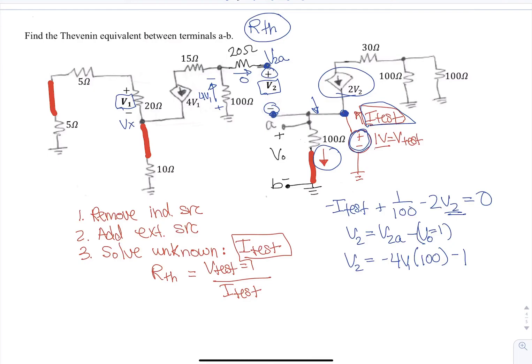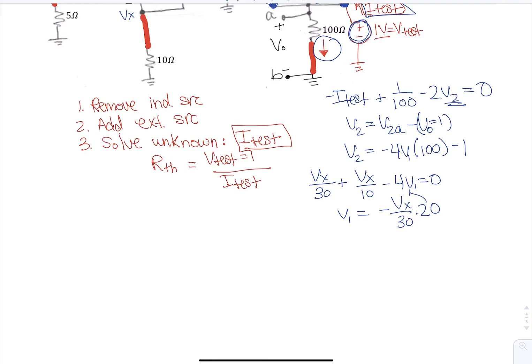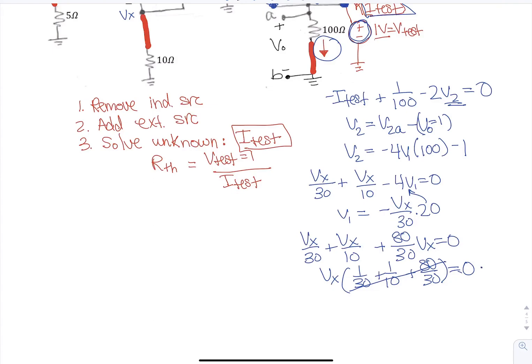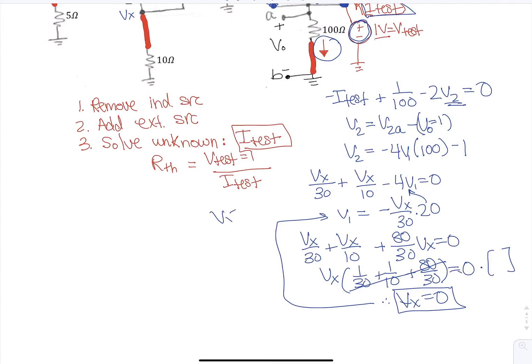V1 is located here — I'll label that node Vx again. Writing KCL: Vx over 30 plus Vx over 10 minus 4V1 equals zero, and V1 is the opposite sign, so minus Vx over 30 times 20. Plugging in: Vx/30 plus Vx/10 plus 80 over 30 times Vx equals zero. When I combine all these terms they're all equal to zero, which means Vx must equal zero. If Vx is zero, then V1 is zero, so the dependent source quantity is zero. Therefore V2 equals minus one volt.